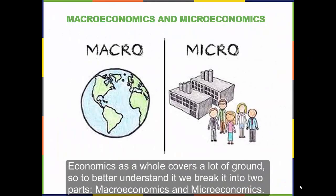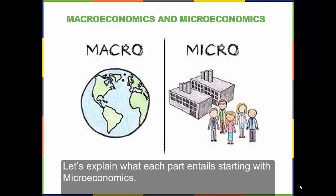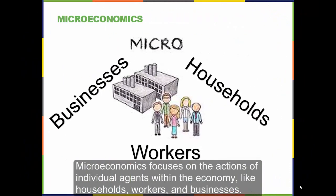Economics covers a lot of ground, so to better understand it we break it into two parts: macroeconomics and microeconomics. Let's explain what each part entails, starting with microeconomics. Microeconomics focuses on the actions of individual agents within the economy, like households, workers, and businesses.